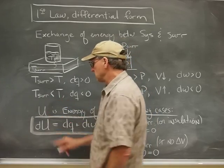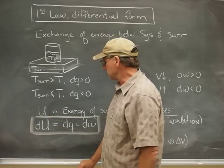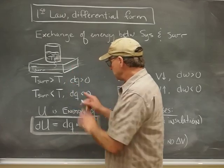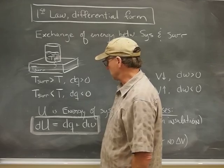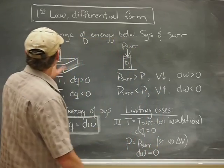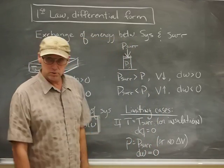Likewise, if the surroundings are cooler than the system, then DQ will be negative, and we imagine heat flowing out of the system into the surroundings. So that's one way that we talk about the exchange of energy between the system and the surroundings.